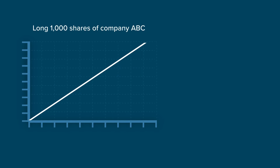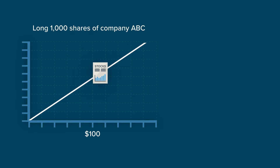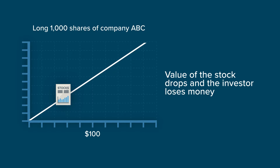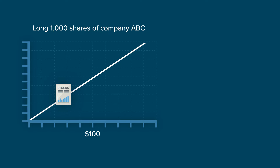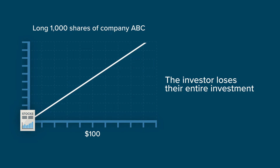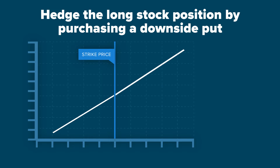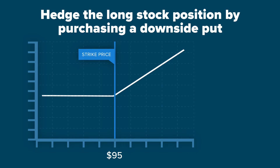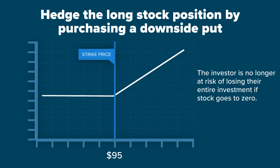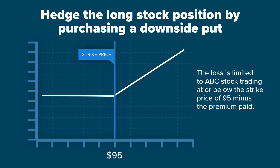In this example, the investor is long 1,000 shares of company ABC whose stock is trading at $100. If the stock price rises, the value of the investment rises. However, if the stock falls, the value of the stock drops and the investor loses money. In an extreme circumstance, the stock goes to zero and the investor loses their entire investment. The investor may want to hedge their long stock position by purchasing a downside put. Watch the P&L plot change as 10 downside puts at the 95 strike are added to the portfolio. The investor is no longer at risk of losing their entire investment if the stock goes to zero.